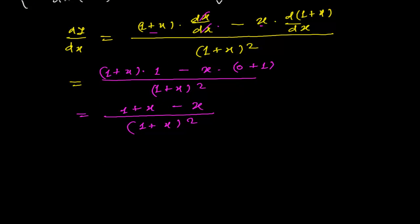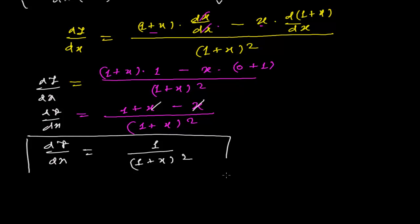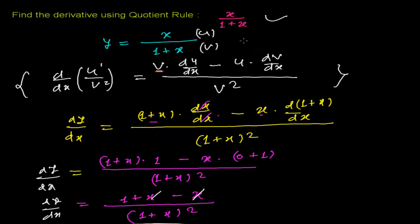Now I can cancel a few things: the x and minus x cancel, and I will get 1 over 1 plus x whole squared. So this is my derivative of the given function, dy by dx. I hope you understand how to use the quotient rule. First, you should know the formula, and then just figure out what is your first function and what is your second function — imagine the numerator as u and the denominator as v — then use the formula and get the value. We will be doing some more difficult problems in the next videos. Keep watching. Bye-bye.